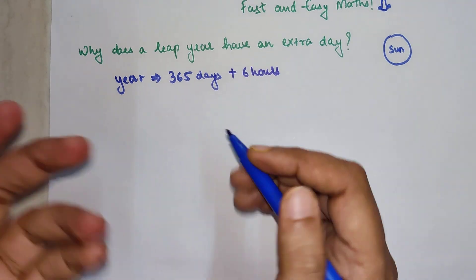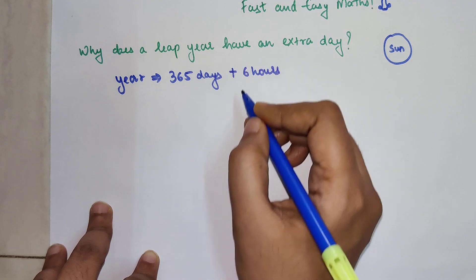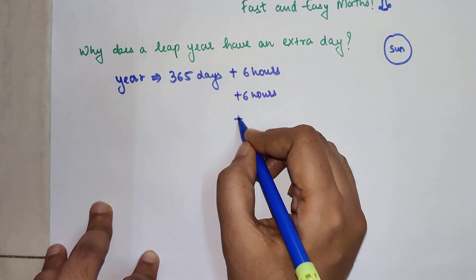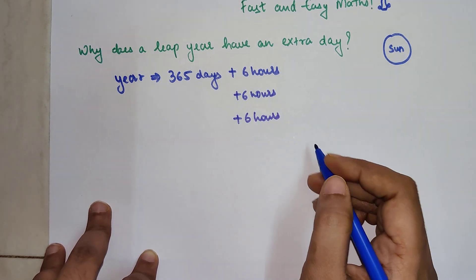The answer is it takes 365 days plus 6 hours. So now imagine this is your first year, then the second year will also take 365 days plus 6 hours. Then the third one will also take 6 hours extra, right?